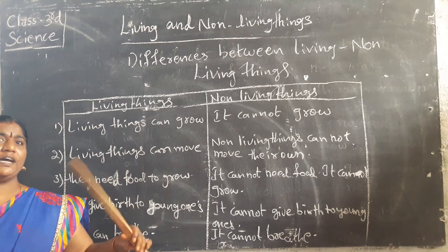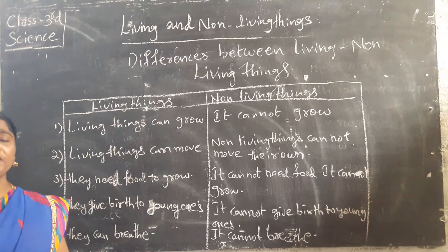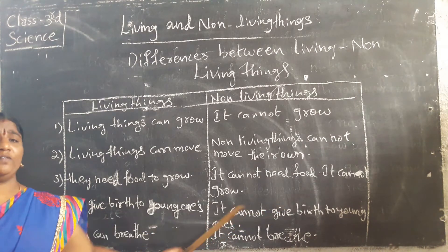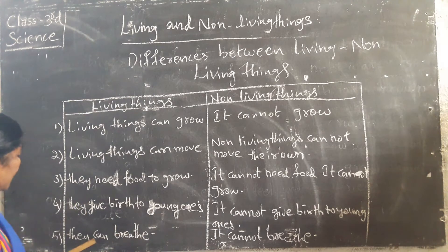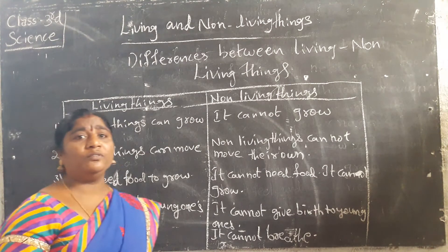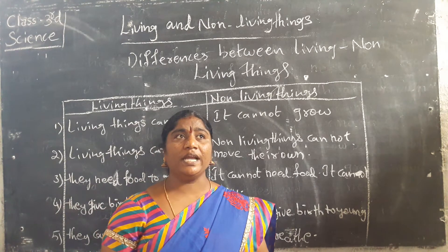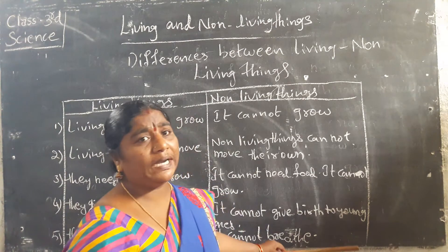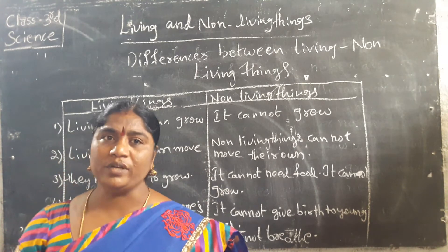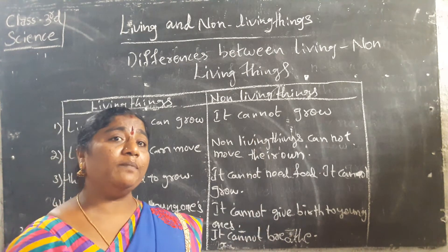Non-living things have no need to take food, water, and such types of things. Living things can give birth to human beings and animals, but non-living things cannot give birth to anyone. Living things can breathe — we have to breathe because we have to live. But non-living things cannot breathe because they have no life in them. Things that have life in them are called living things.